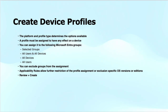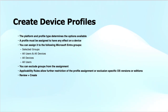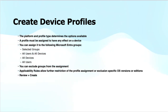A profile must be assigned to have any effect on a device. That assignment can take place on selected groups of devices, all users, or all devices. You can also exclude certain groups from the assignment, and you can define applicability rules to exclude some devices based on their attributes — such as operating system version, architecture, or edition. Finally, you review the settings you have defined and create the device profiles, completing the assignment. Demonstrations on creating these profiles will be shown in later videos.